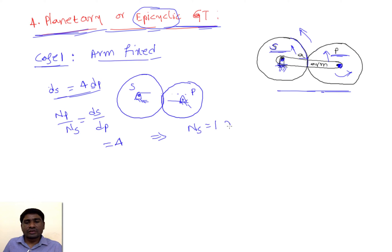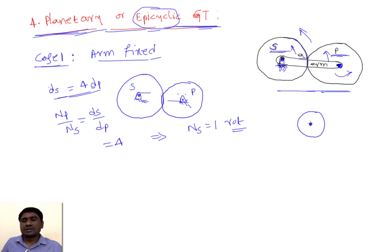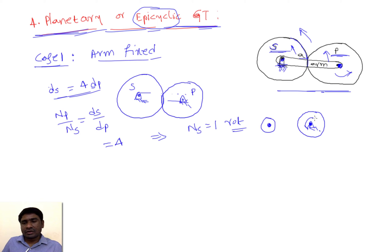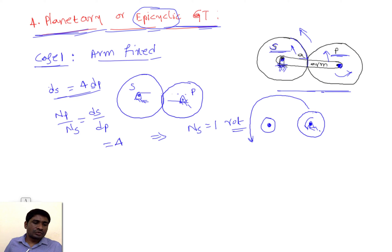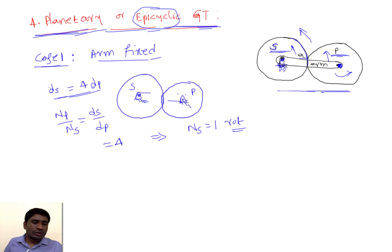What does it mean? If I give nS equal to one revolution, first let me clarify the difference between rotation and revolution. Rotation is rotating about its own axis — that is a rotation. But if a body is revolving around another body, like the Earth revolving around the Sun, that is called a revolution. We need to identify those two differences here.